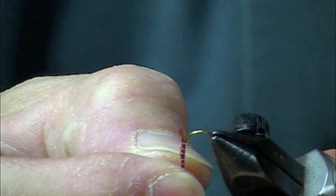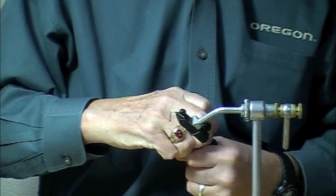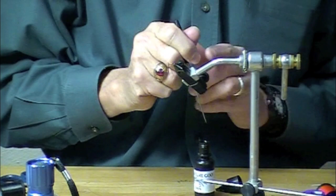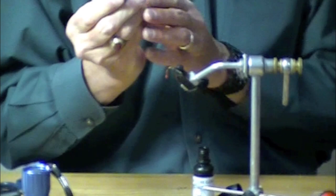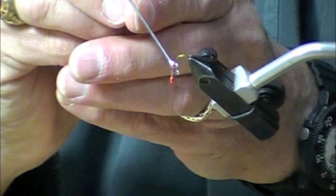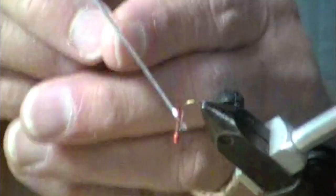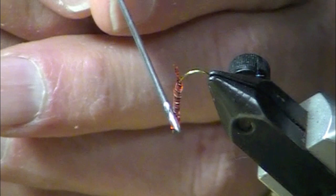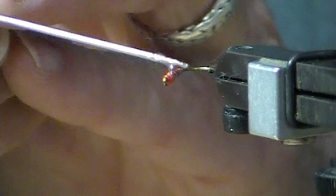So that's the fly. Now I'm going to turn it down like this as I apply. And I've got the clear cure goo thin. And I like to apply this with my bodkin on a small fly like this. So I just pick up a little bit like that. Rub it on.